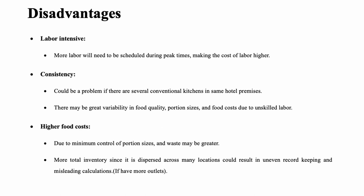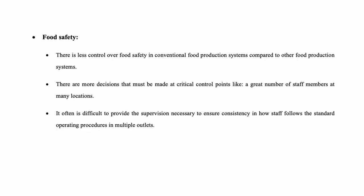Higher food cost is another disadvantage due to minimum control of portion size, and waste may be greater. More total inventory, since it is dispersed across many locations, could result in uneven record keeping and misleading calculations. Finally, there is less control over food safety in the conventional food production system compared to other systems, as more decisions must be made at critical control points across a great number of staff members at many locations.